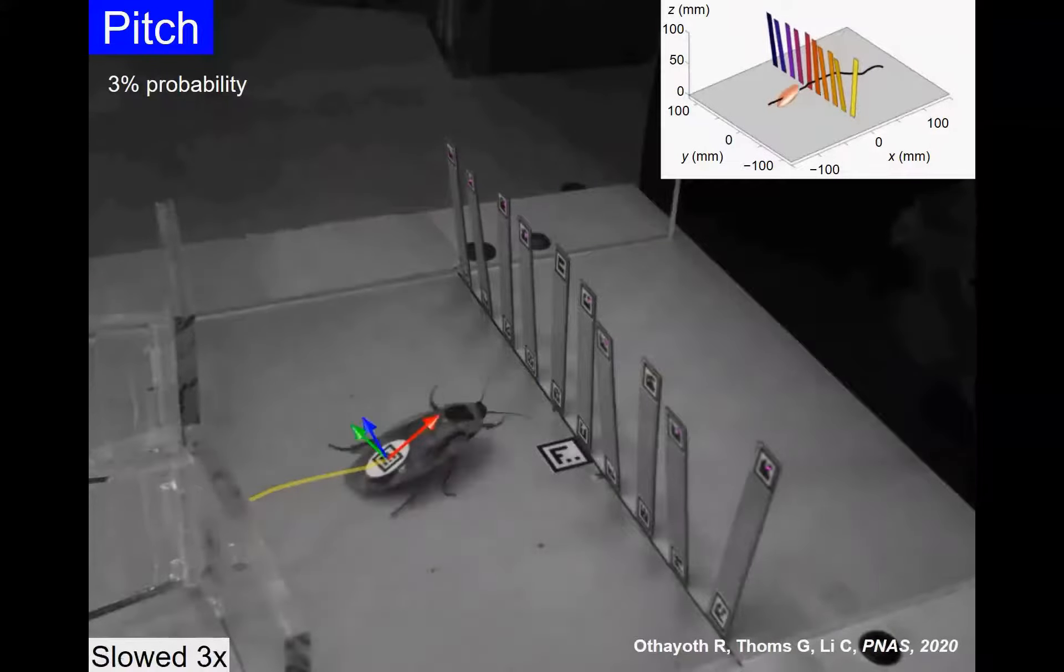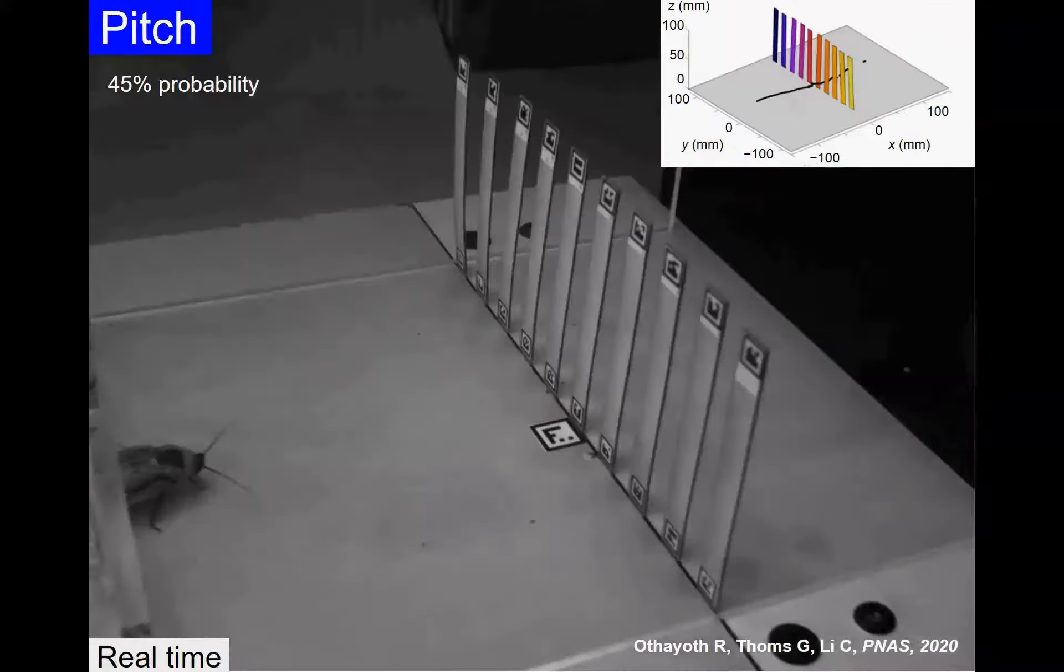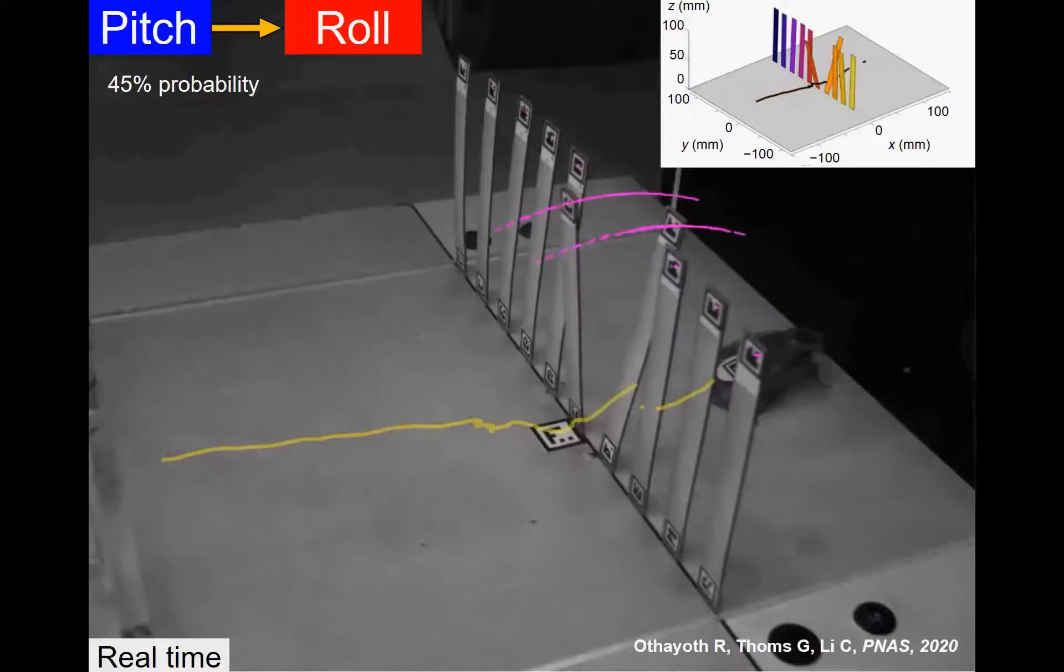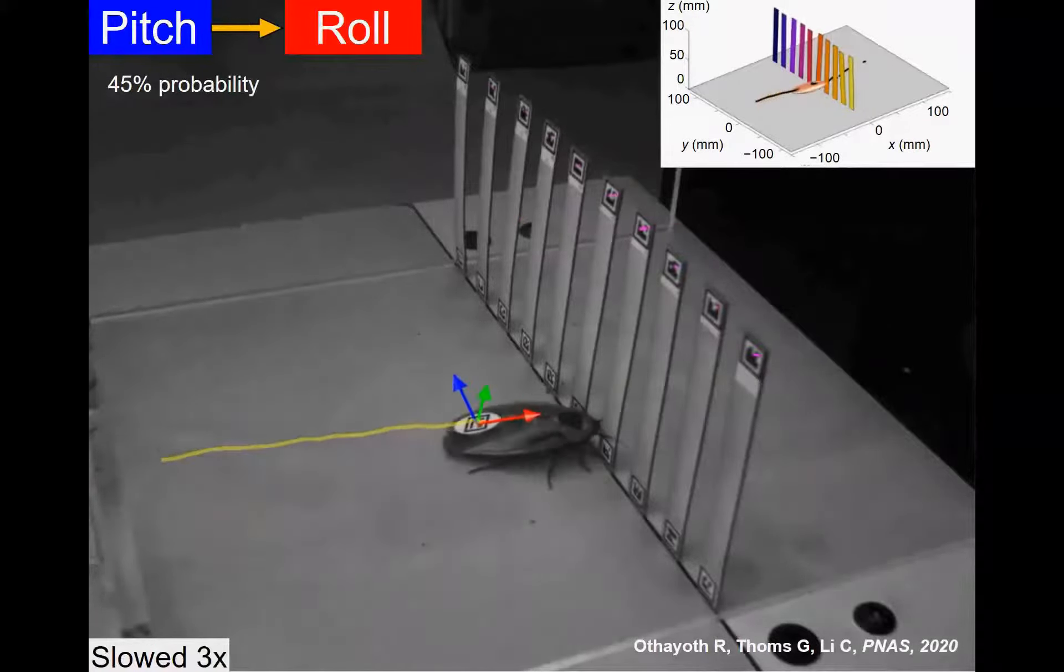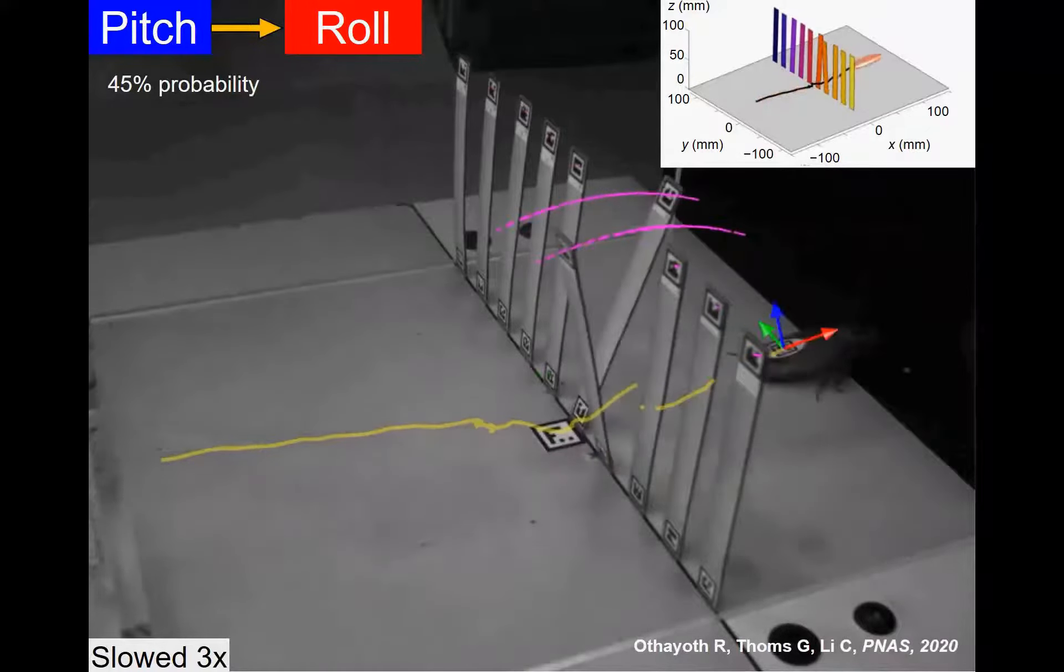Here we'll look at cockroaches traversing beam obstacles. Our previous study found that a cockroach traversed these obstacles using two modes. In the pitch mode, the animal tried to push and rush through the beams. But when the beam stiffness went high, the animal transitioned from pitch mode to roll mode. In this mode, the animal first pitched its body but quickly found another way and rolled the body into the gap.